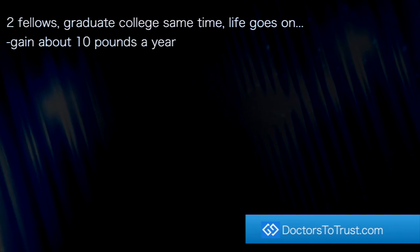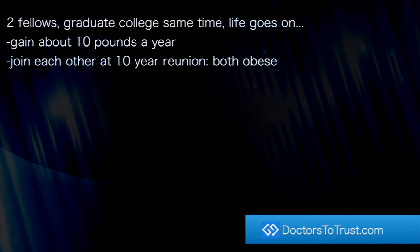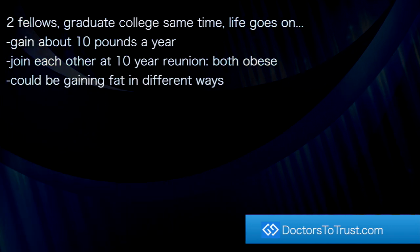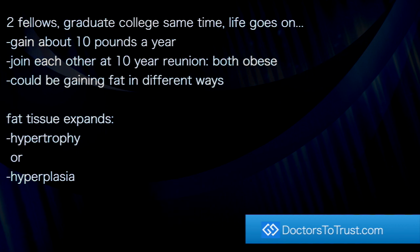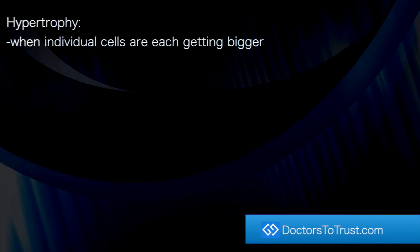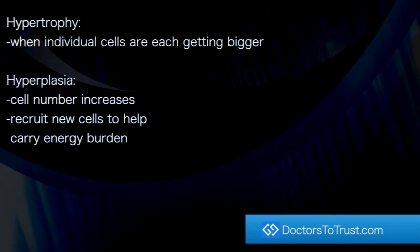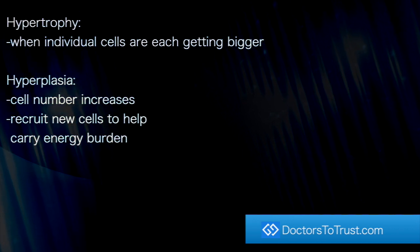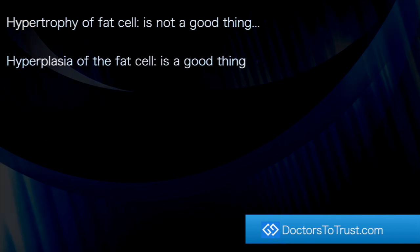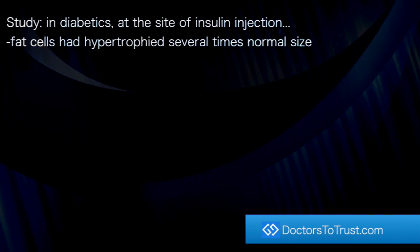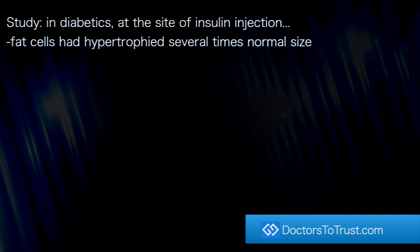To recap: two fellows graduate college at the same time, gain about 10 pounds a year, and meet at a 10-year reunion both obese — but they could be gaining fat in different ways. As fat tissue expands, it is either hypertrophy, where individual cells get bigger, or hyperplasia, where cell numbers increase and new cells are recruited to help carry the energy burden. Hypertrophy of fat cells is not a good thing; hyperplasia of fat cells is a good thing. In a study of diabetics, fat cells at the site of insulin injection had hypertrophied several times the normal size.